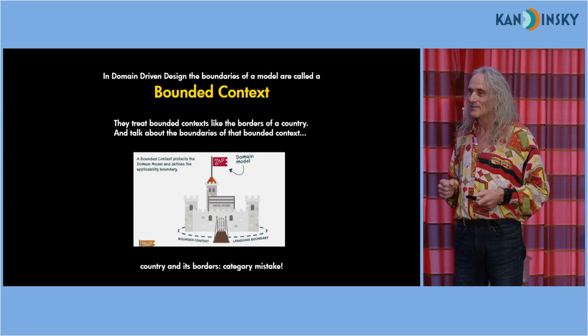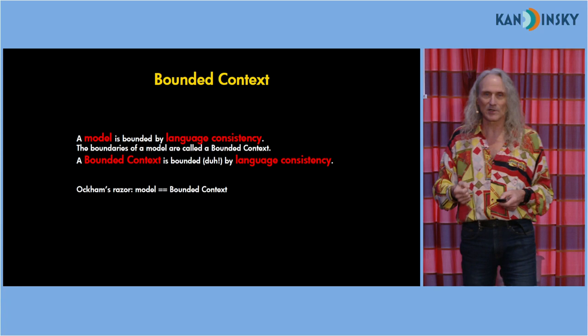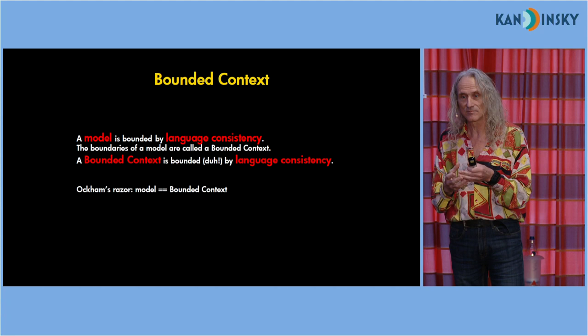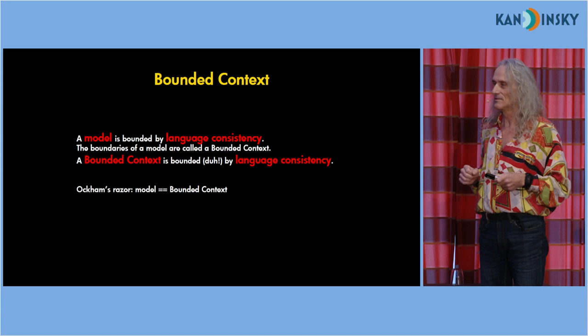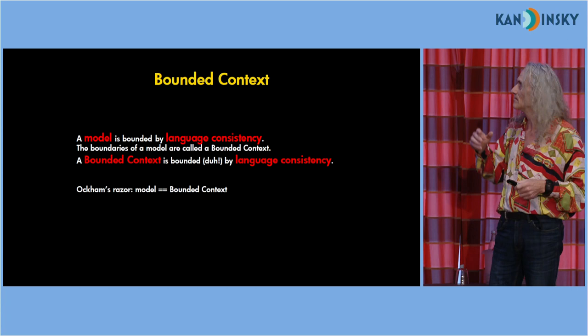I think that could be simpler. By taking Occam's razor, a model is constrained by the consistency of language, and a bounded context is also constrained by the consistency of language. So in fact, they are the same thing — not two different things, just like a country and its borders are not two different things. Otherwise you would make a category mistake.